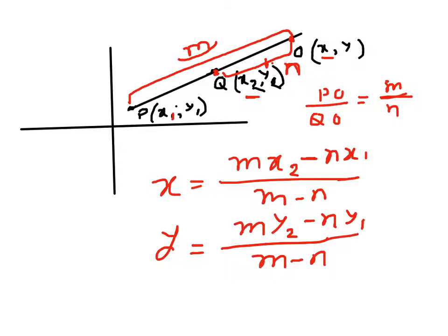So for example, if point P is 2, 3 and then Q is 4, 5, if we want to find the point xy that divides it externally in a ratio of 2 is to 1, then what we can do is use M as 2.